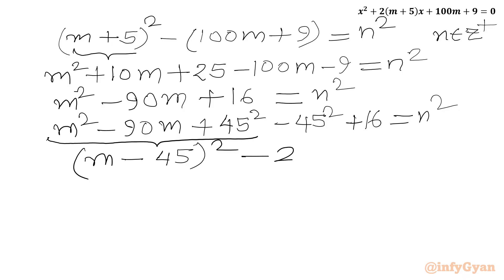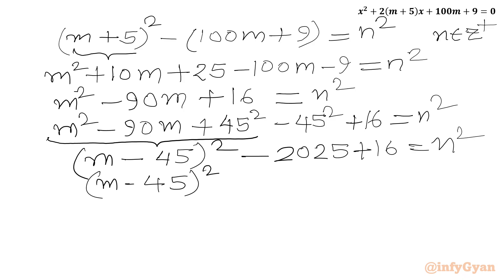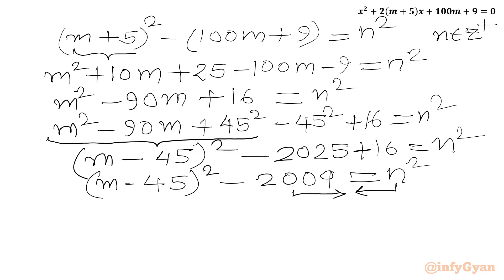45² is 2025. So we have (m - 45)² - 2025 + 16 = n², which gives (m - 45)² - 2009 = n². Rearranging, we take n² to the left and -2009 to the right: (m - 45)² - n² = 2009.